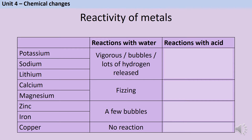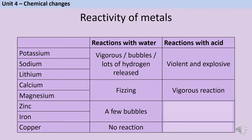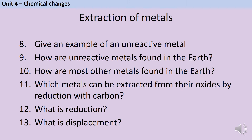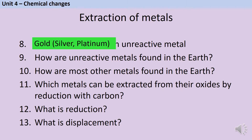When we react the metals with acid, the reactions are more vigorous than they are with water — the alkali metals are violent and explosive. The group 2 metals have a really quite vigorous reaction. Zinc and iron show visible fizzing, and copper still does not react. Your specification lists gold as an example of an unreactive metal, although other acceptable answers would be silver and platinum.